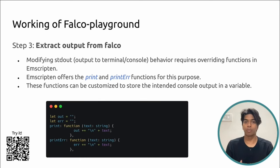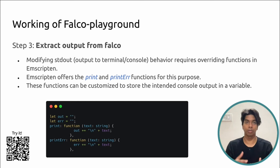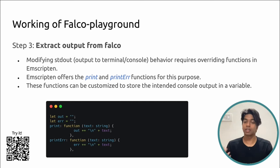Now that rule files are stored in memory, we supply them to Falco for further validation and extract the information Falco provides after validating the rule files. Falco being a command-line tool outputs information to standard output — in this setup, that goes to the browser's console, which is not very helpful. To solve this, we override the print functions provided by Emscripten and instead of printing to the browser's console, we store the output in a local variable. This lets us capture and manipulate Falco's output within our web application, redirecting it from console to a place where we can work with it effectively.